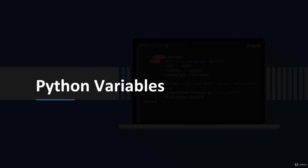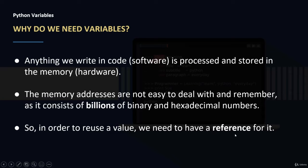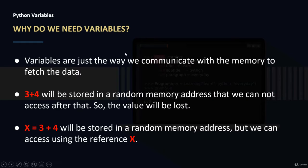In this video we will learn everything about Python variables. Anything we write in code is processed and stored in memory, which is hardware. Memory addresses are not easy to deal with — they consist of billions of binary and hexadecimal numbers. In order to reuse a value we need a reference for it, and a variable is that reference to the data at a memory address.